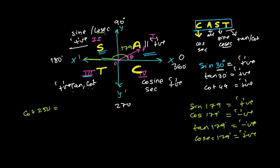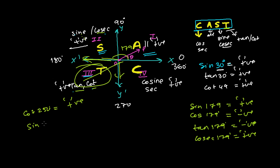Let's say we have cot 250 degrees. Since 250 is between 180 and 270, it falls in the third quadrant. In the third quadrant tangent and cotangent are both positive, so yes, we get a positive value. Similarly, sine of 239 degrees — 239 is also between 180 and 270, so it's in the third quadrant, and sine is negative in the third quadrant since sine is positive only in the second quadrant.